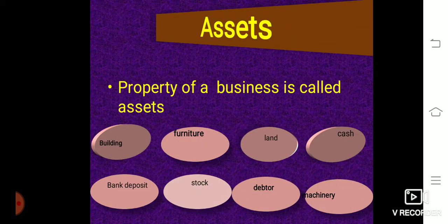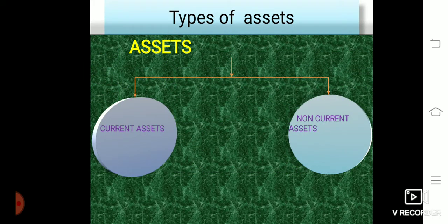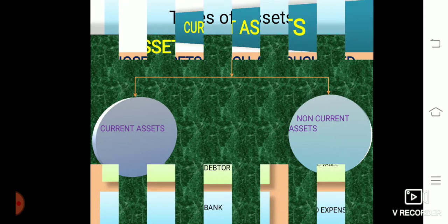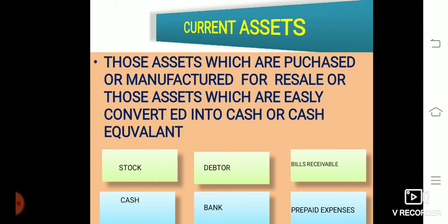The next accounting term is assets. Assets means property of the business — for example, building, furniture, land, cash, bank deposit, stock, debt, or machinery. There are two types of assets: current assets and non-current assets. Current assets are those assets which are purchased or manufactured for resale, or those which are easily converted into cash or cash equivalents — such as stock, debtors, bills receivable, cash, bank, and prepaid expenses.